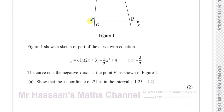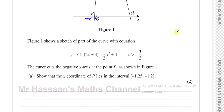That means minus 1.25 is on this side of P, and minus 1.2 is on that side of P — somewhere in that interval it lies. So how do we show that a root — a root is where the curve crosses the x-axis — is between two values? We do this by what's called the change of sign rule.